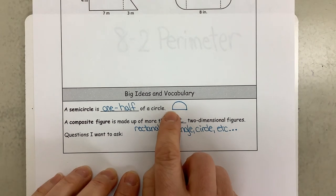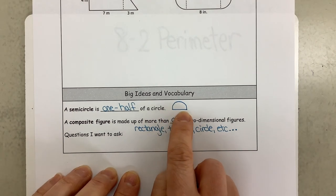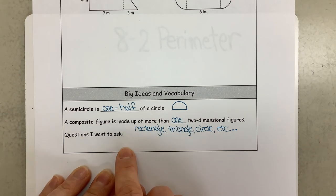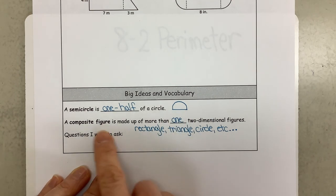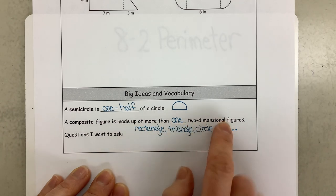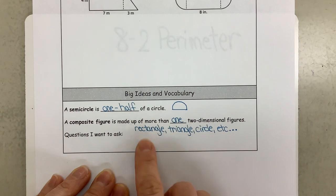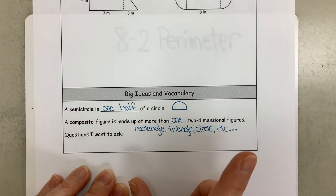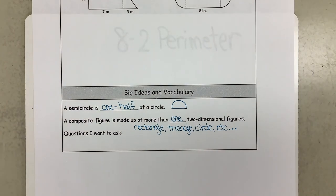Now a composite figure is made up of more than one two-dimensional figure. So two-dimensional means it's on the paper, such as you might have rectangles, triangles, circles, or a whole bunch of other items.